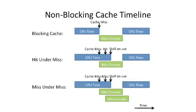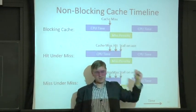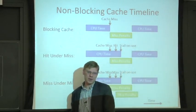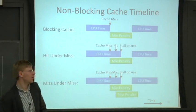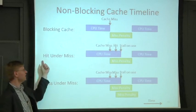Let's look at a timeline — time goes from left to right. At the top we have a blocking cache. You're happily running the CPU, you do a load or a store, and you take a cache miss. In the most basic blocking cache, you wait for the cache line to get filled in, then you return the data and keep running the CPU. There's no overlap happening here. But we want to go faster — with a non-blocking cache, we can take a hit under a miss.